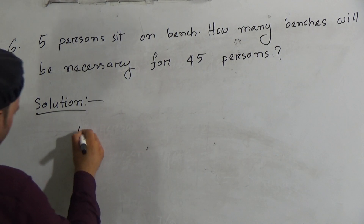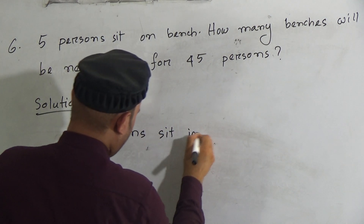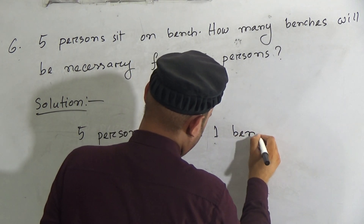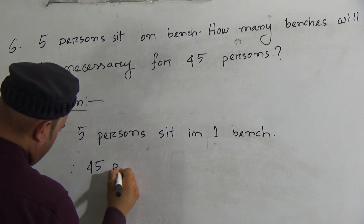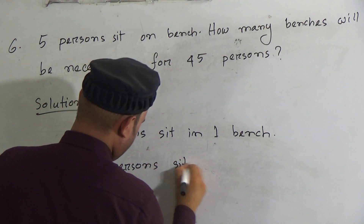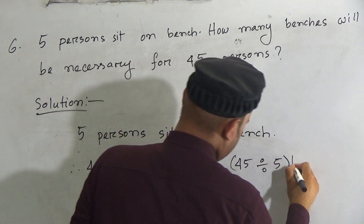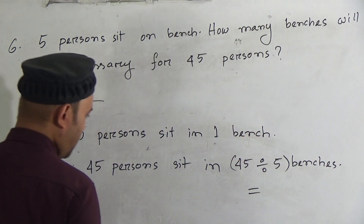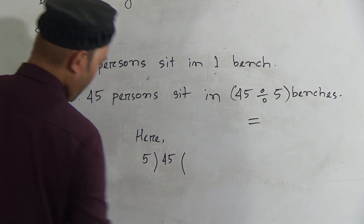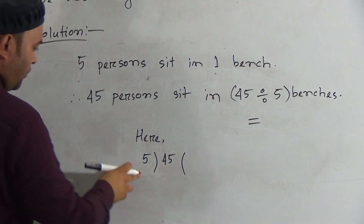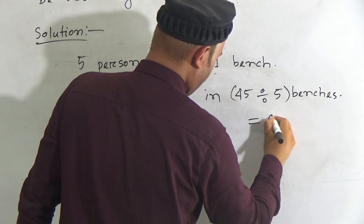Solution: 5 persons sit in one bus. Here there are 45 persons, so they will need 45 divided by 5 buses. Memorize the times table of 5: we know 5 nines are 45. So 45 divided by 5 equals 9 buses.